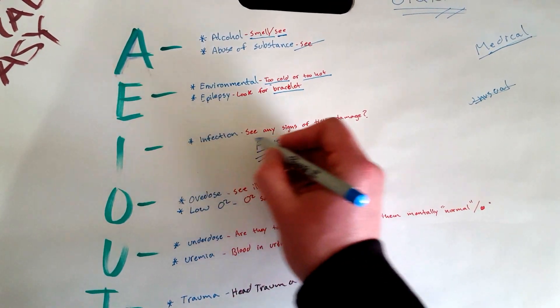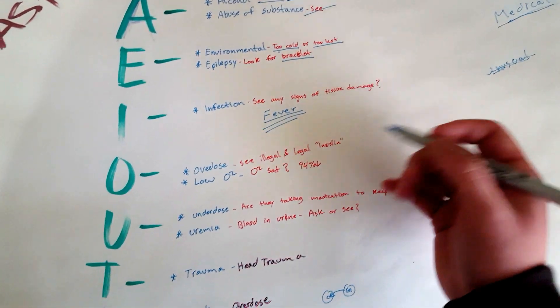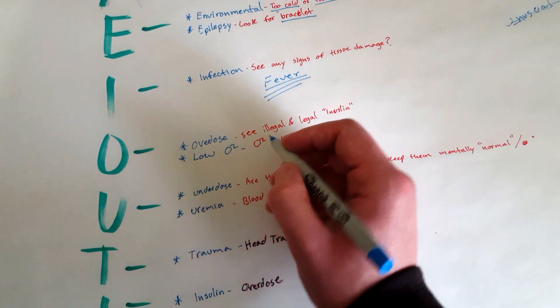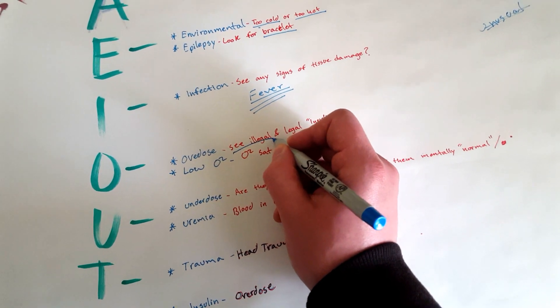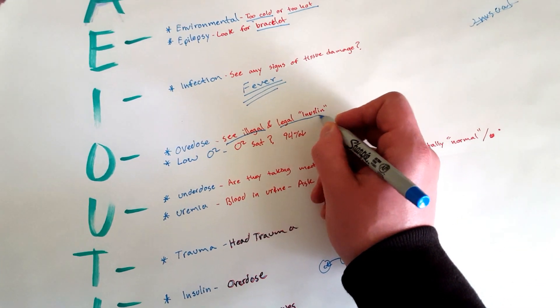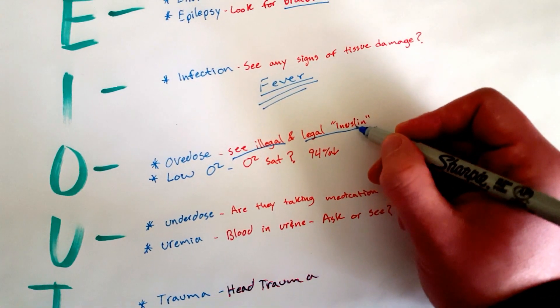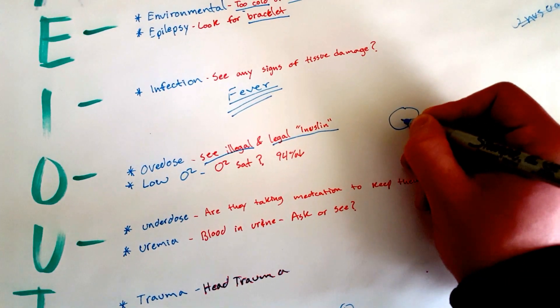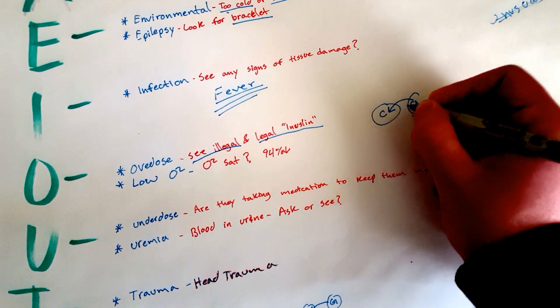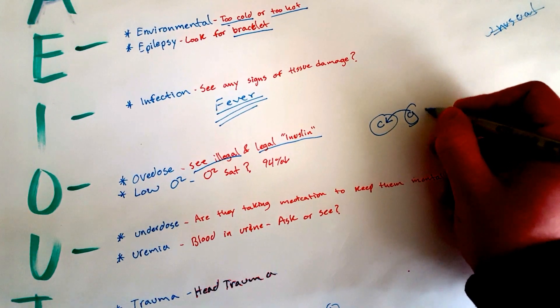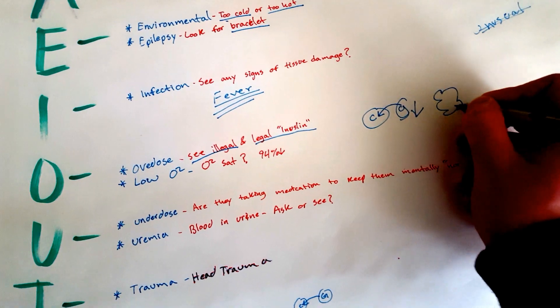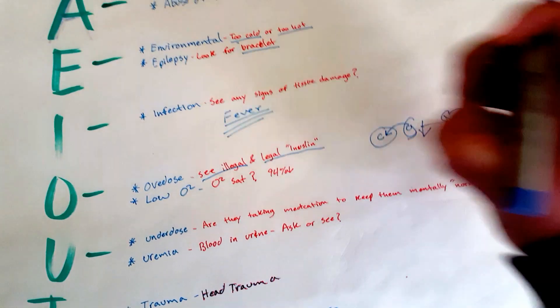Then O: Overdose, both of illegal drugs—so cocaine, methamphetamine, heroin—and legal drugs. Insulin is a good example. If they take too much insulin, that glucose will rush into all their cells and it will leave little to no glucose outside in the bloodstream. So now the brain isn't able to take glucose and function adequately.